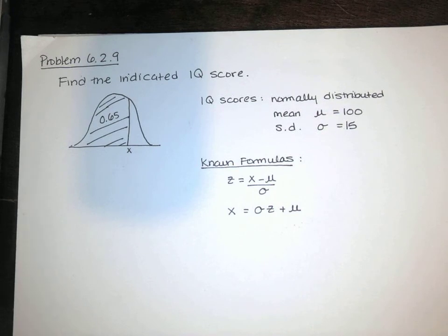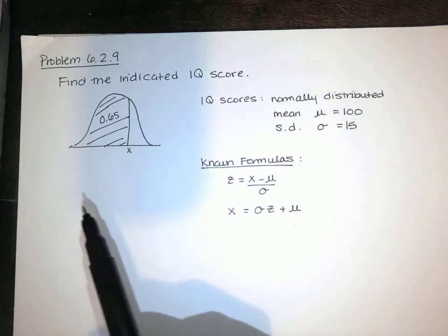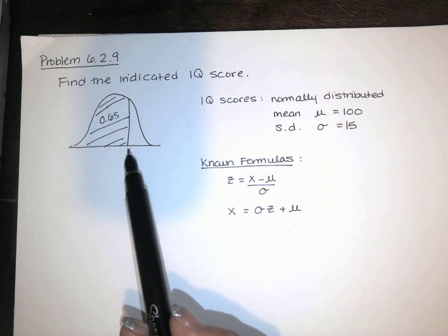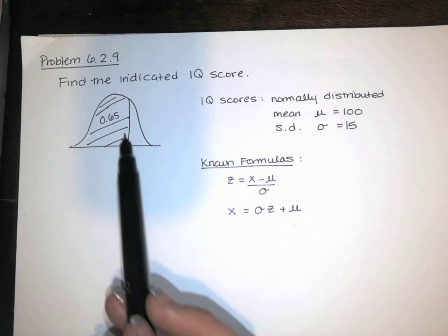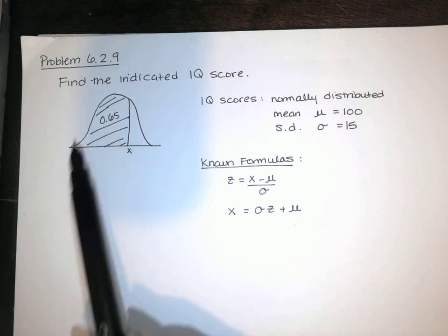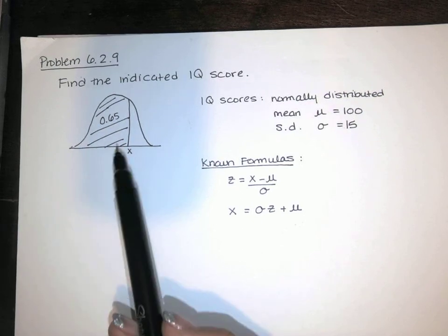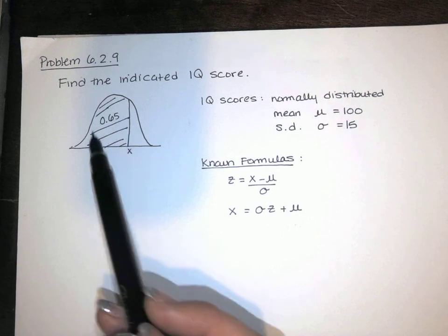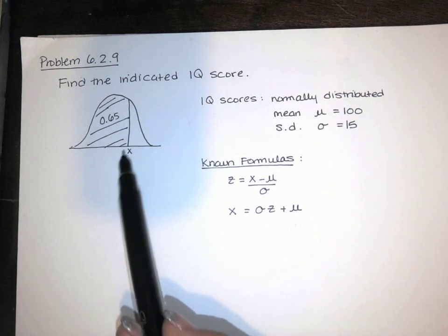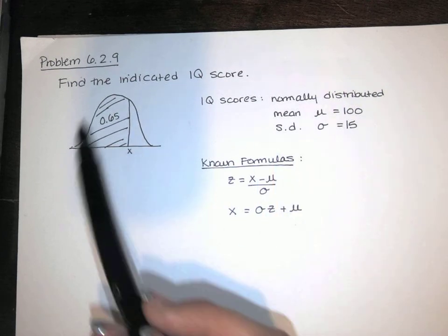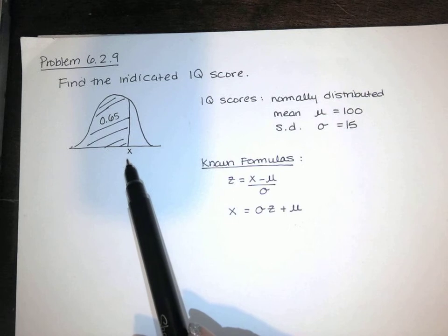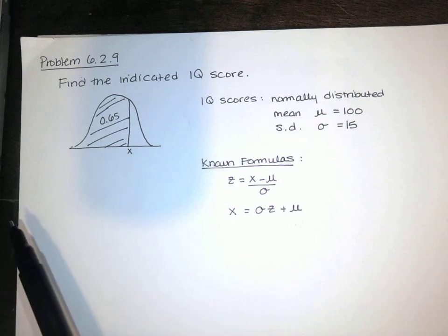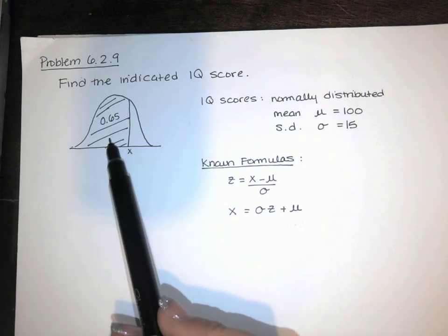They're asking us to find an indicated IQ score, indicated by the variable x. They want us to find the IQ score such that 65% of all the other IQs are less than that IQ score. So this time, they're giving us the area or the probability that a score is less than this x value, and then they're asking us for the x. Before, we were often given the x and asked to find the associated probability. This time, they're giving us a probability and asking for the score.